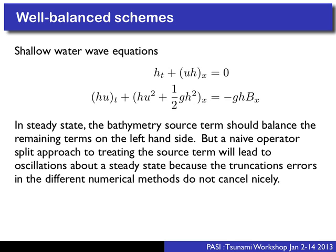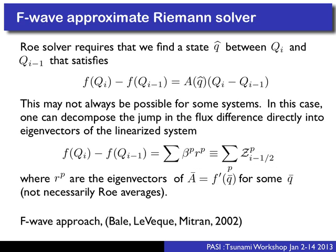Unfortunately, in the tsunami modeling case, because of the physical dimensions of the problem, this approach doesn't work very well at all. David George showed examples of how oscillations can develop because the truncation error in the numerical methods used for the two different pieces of the update — the left-hand side and the right-hand side — don't cancel nicely. On mesh sizes practical for actual tsunami modeling, you'll see oscillations on the order of the size of the phenomena you're trying to look at.